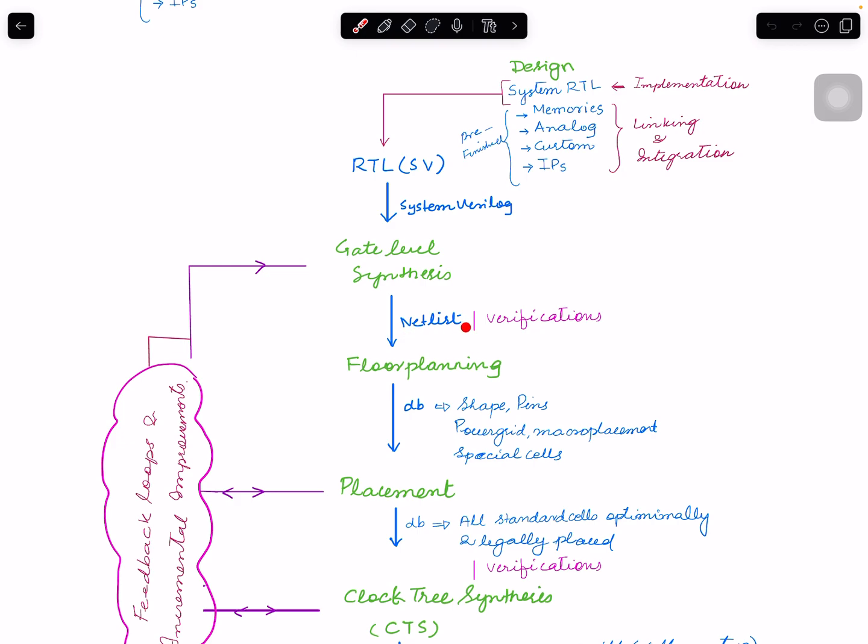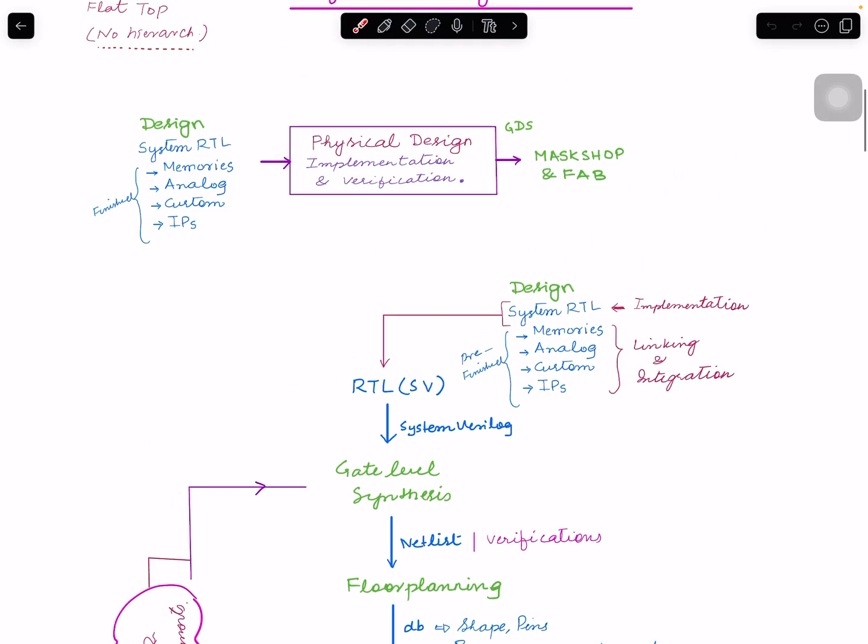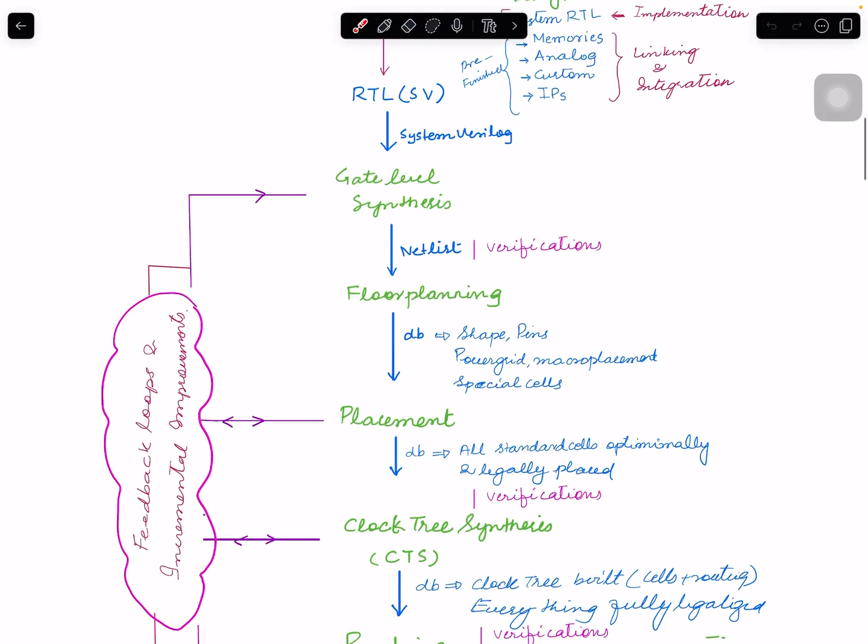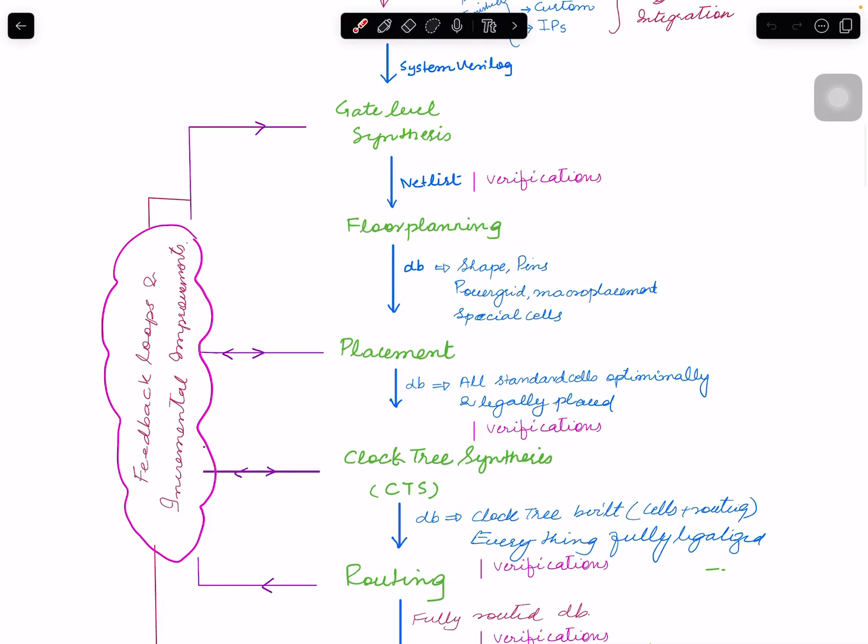When we do that synthesis netlist, you will see at every stage I have verification because we have to verify certain things, the quality of results at each stage. We have to go through logs, reports, and everything.